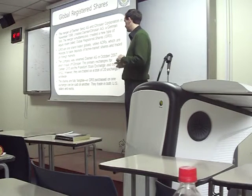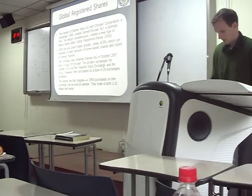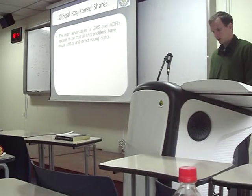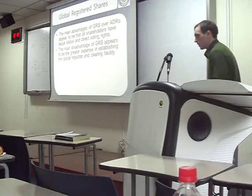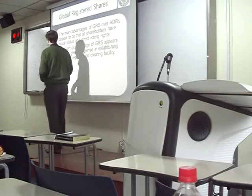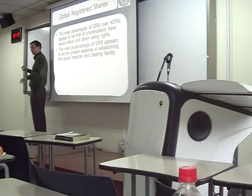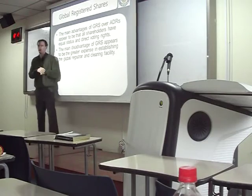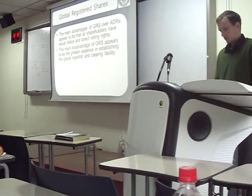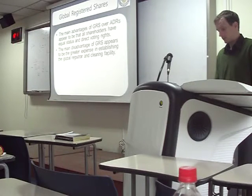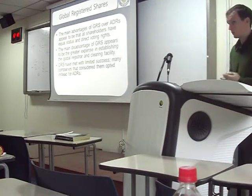With a global share, I can buy the share in New York and then sell it in Frankfurt. Normally you can only buy and sell in one market. They can trade in both US dollars and Euros. The main advantage is that all shareholders have equal status and direct voting rights. With ADR, it's hard to vote — the bank holds the shares and you have to send documents back and forth. But with the global registered share, you can vote directly. The disadvantage is you need to create a global register and clearing facility — an administrative body — which is costly.